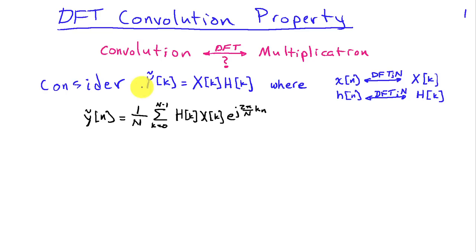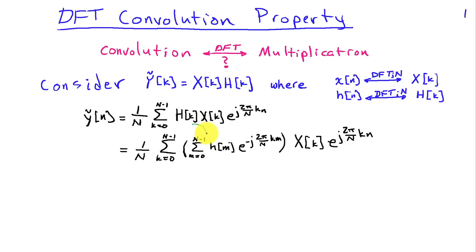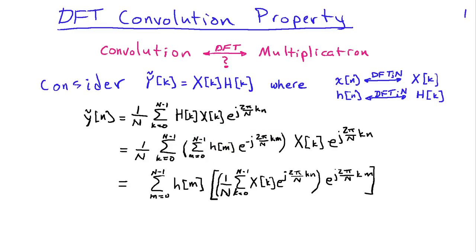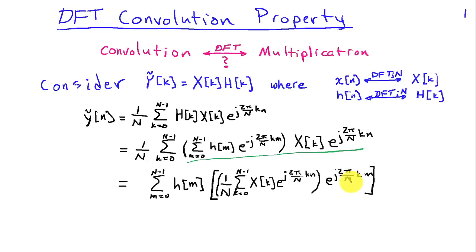I'm going to define a quantity y-tilde of k, which is the product of two sets of DFT coefficients, x of k and h of k, each of length N. I can therefore write the expression for y-tilde of n, the time domain signal, using the inverse DFT of y-tilde of k, which is just h of k times x of k. For h of k, we're going to substitute the discrete-time Fourier transform expression to write this in terms of h of m.